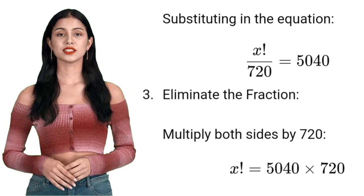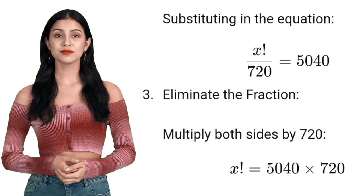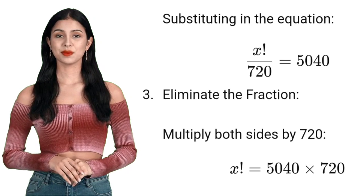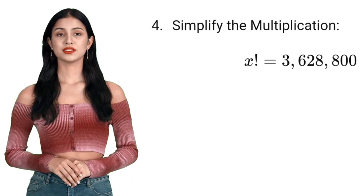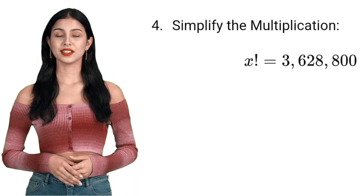To eliminate the fraction, we multiply both sides of the equation by 720. x factorial equals 5,040 times 720. Multiplying these two values together gives us x factorial equals 3,628,800.